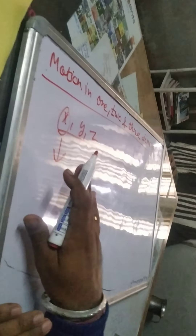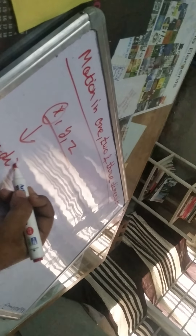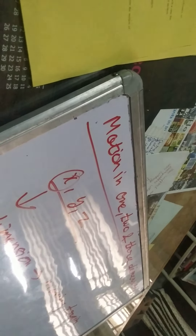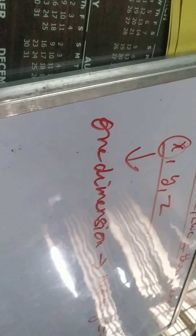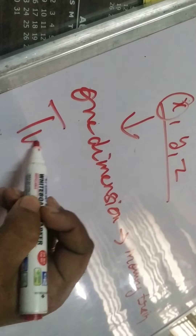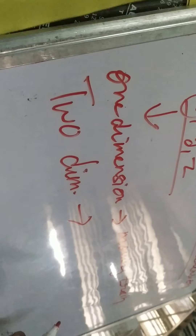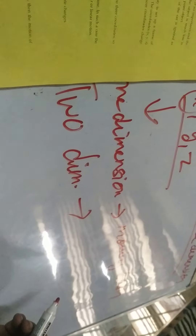The motion in which the position of the object is specified by only one coordinate — whether it is x, y or z — is called one-dimensional motion. An example is a moving train. In two-dimensional motion, two coordinates are used. An example of this is the motion of planets.